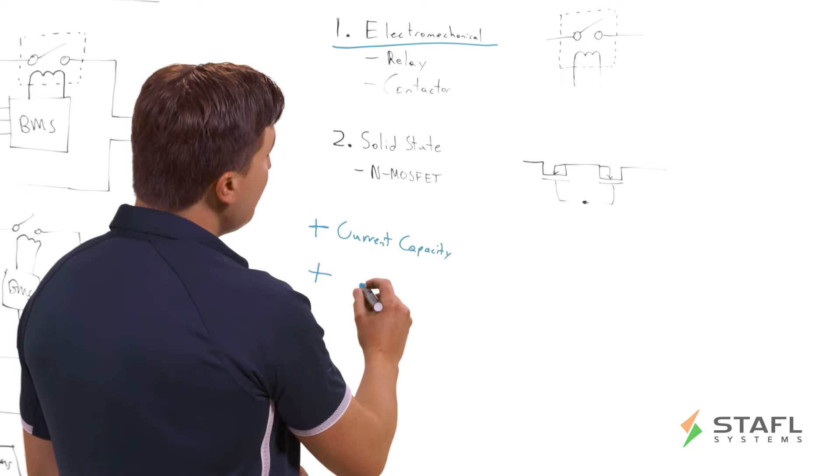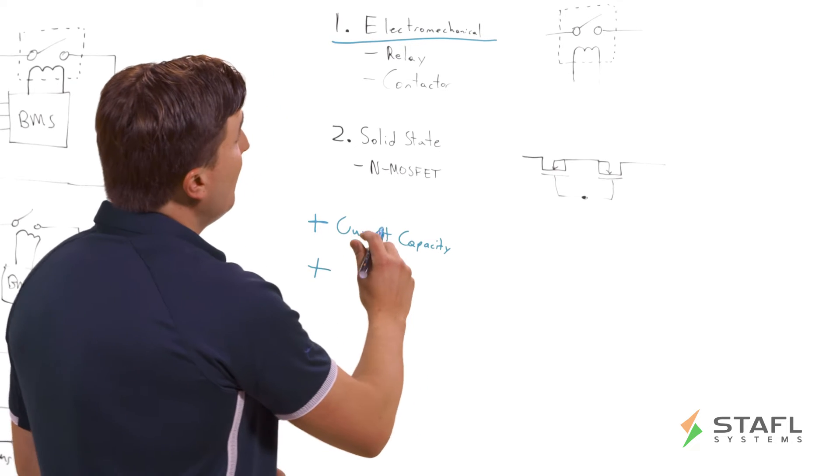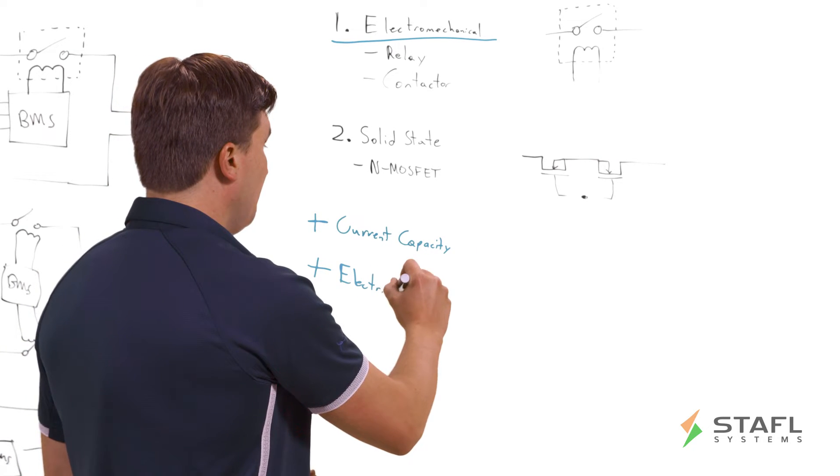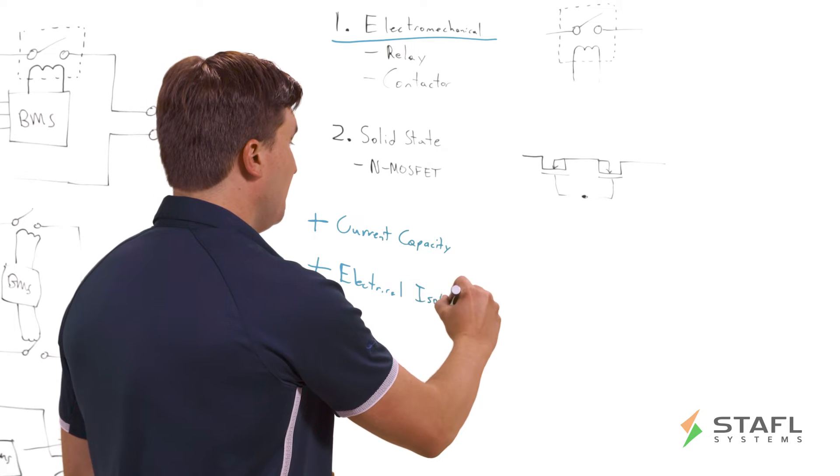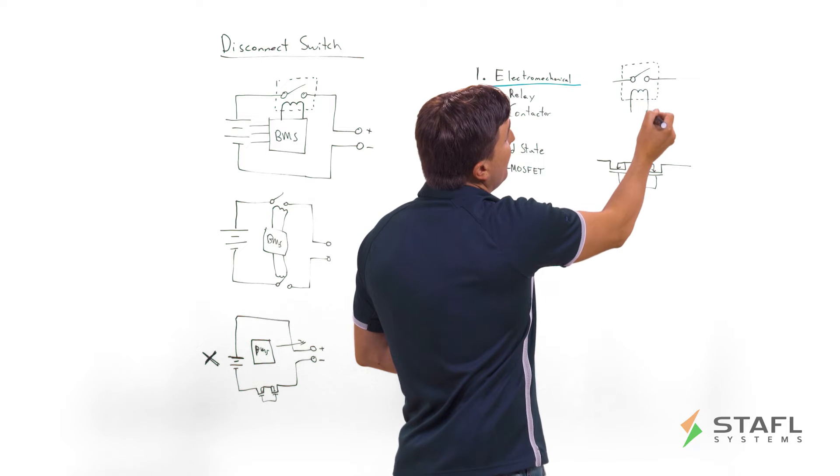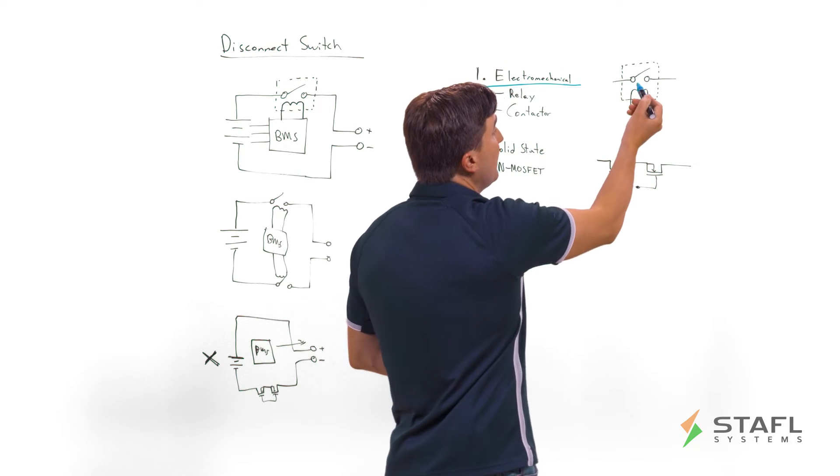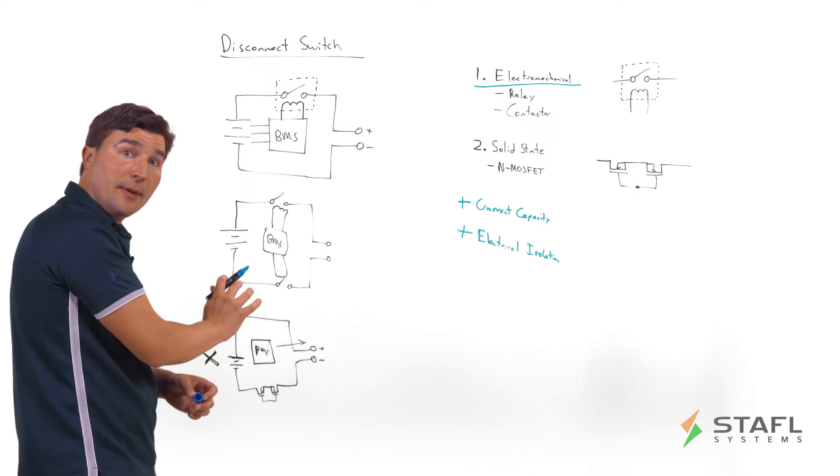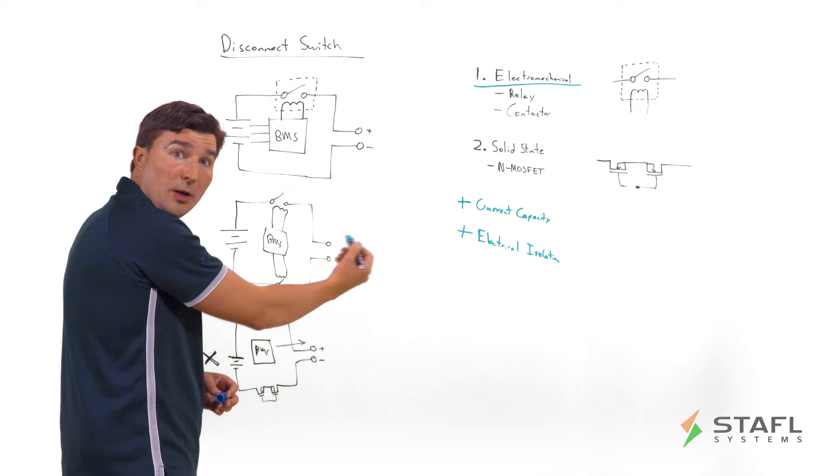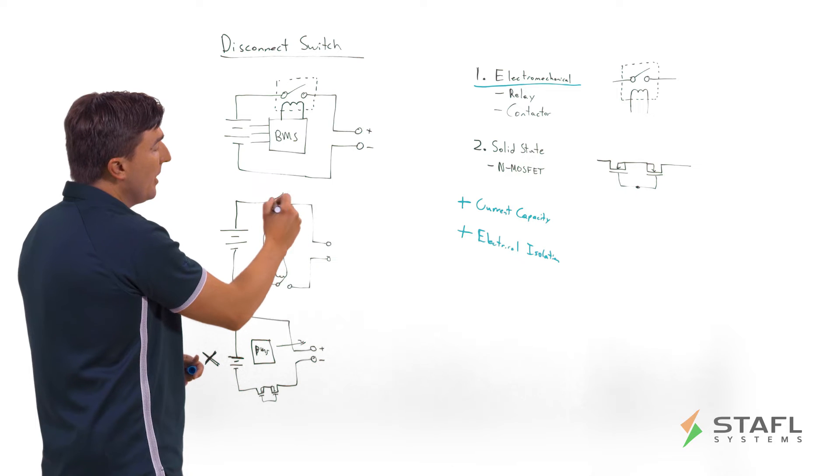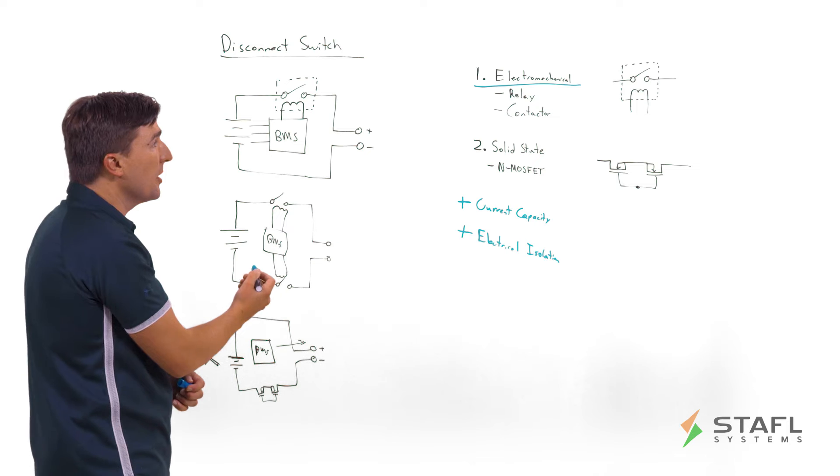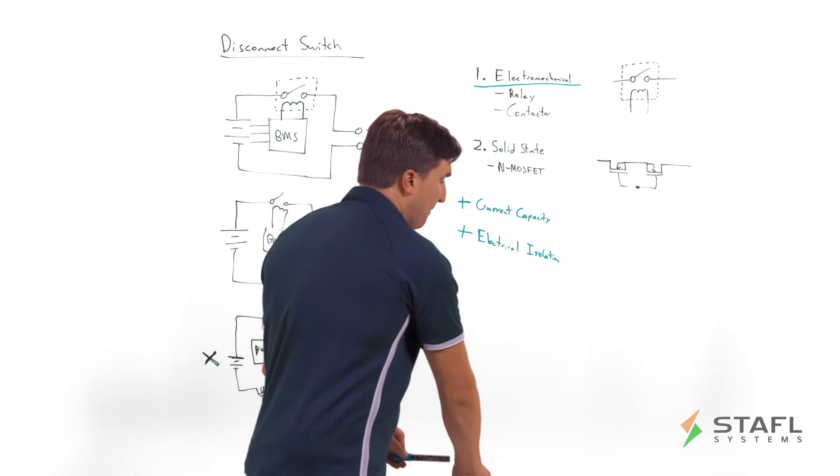It also allows you to have electrical isolation. Because remember, in this diagram the coil drive is electrically isolated from the actual contacts. For example, in a high voltage electric vehicle battery, the BMS can be referenced to the low voltage system ground, the 12 volt system, and drive these contactor coils without having to have a separate electrical isolation circuit. And that's actually very helpful.